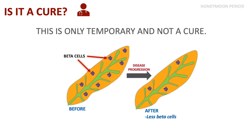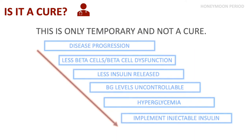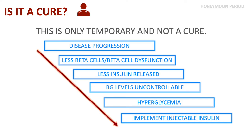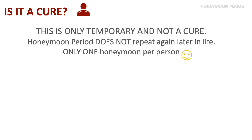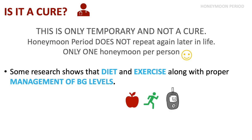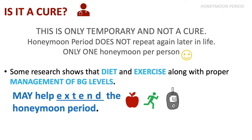Is the honeymoon period a cure for type 1 diabetes? The answer is that it is only temporary and not a cure. Eventually, as the disease progresses and fewer beta cells remain, insufficient insulin will be released to control hyperglycemia, and injectable insulin will be needed. The honeymoon period does not repeat itself later in life. However, research shows that diet, exercise, and proper blood glucose management may help extend the honeymoon period.